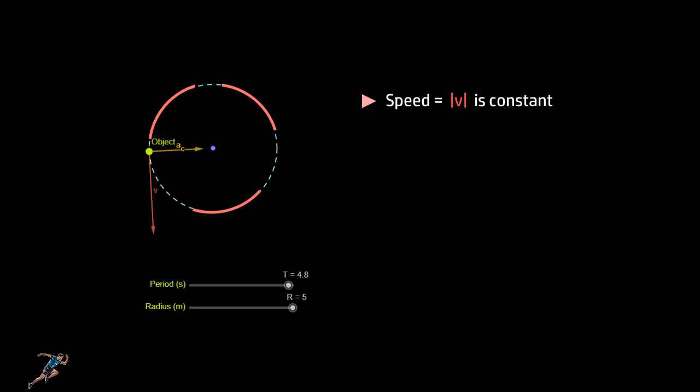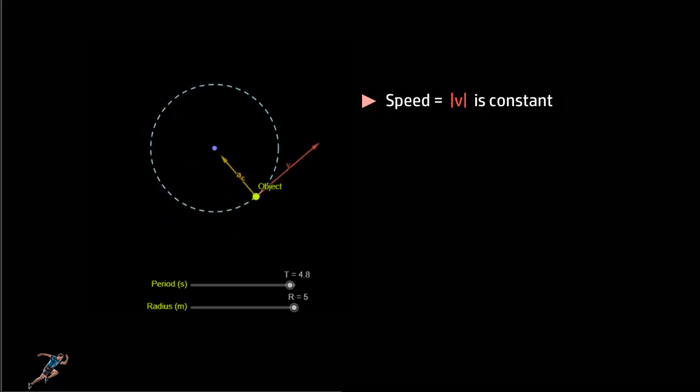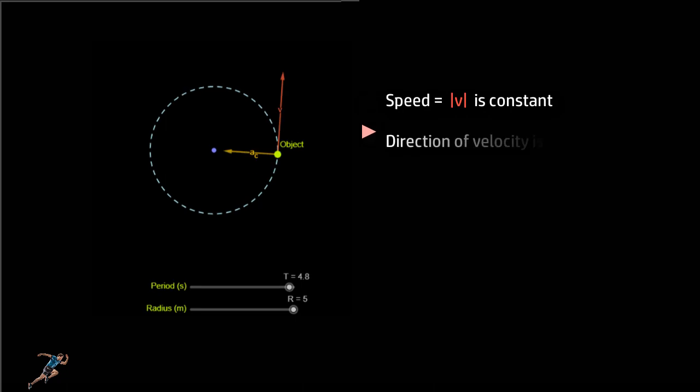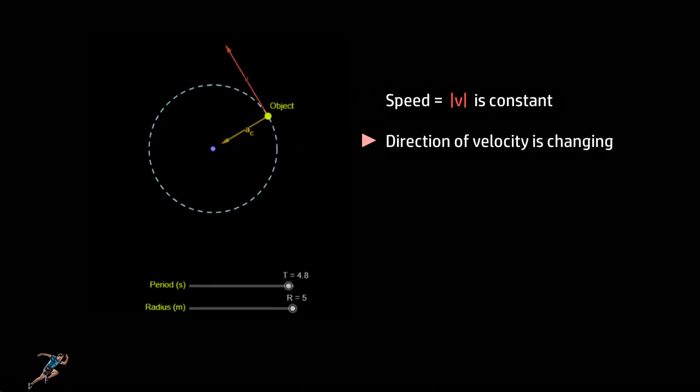However, the particle's velocity is changing constantly. And why do we say that? Because you can see the direction of the velocity vector is changing as the object curves at every point on its circular path.